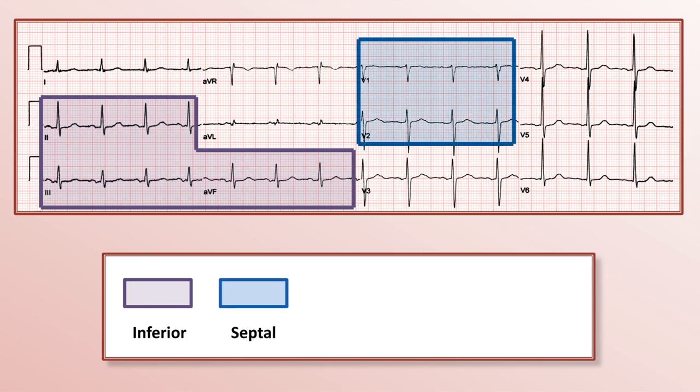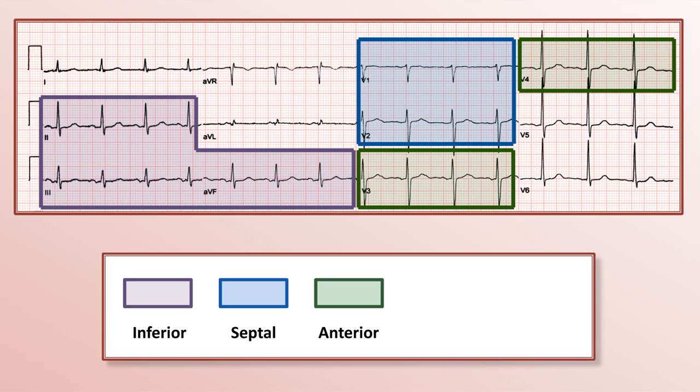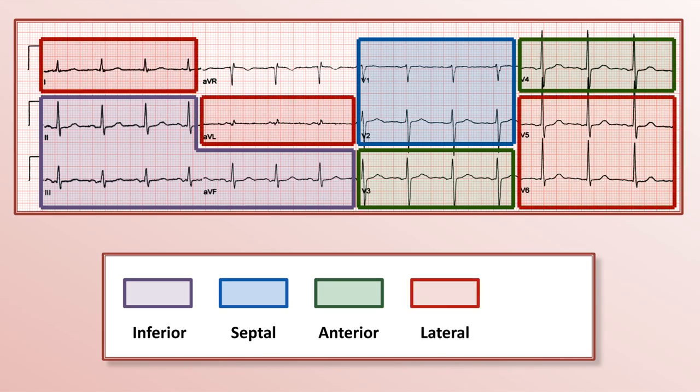V1 and V2 are the septal leads, V3 and V4 are the anterior leads, 1, AVL, V5, and V6 are the lateral leads, and finally AVR is ungrouped.